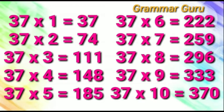37 fives are 185. 37 sixes are 222. 37 sevens are 259. 37 eights are 296. 37 nines are 333.